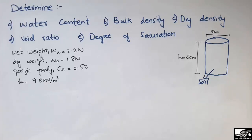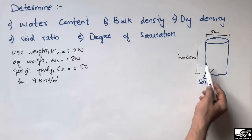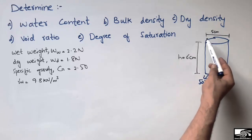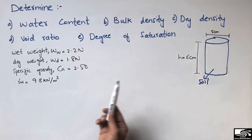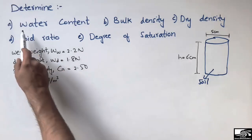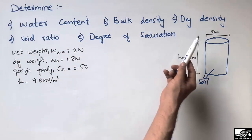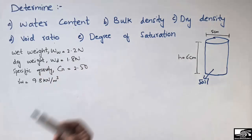Welcome back to the C1 Engineering YouTube channel. Please subscribe for daily videos. Today we are going to solve one example related to soil mechanics in which we have to find the unknown parameters of the soil sample. Let's suppose there is a cylinder of height 6 centimeters and diameter of 5 centimeters. We want to find the water content, bulk density, dry density, void ratio, and degree of saturation.